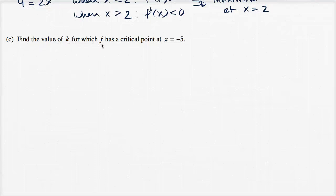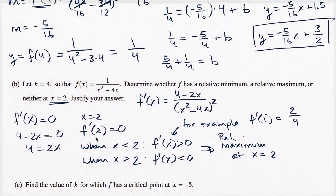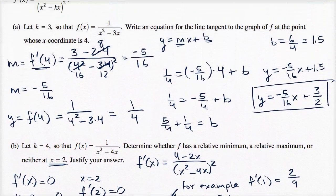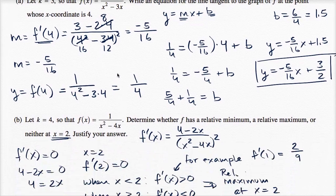Find the value of k for which f has a critical point at x equals negative five. Let's remind ourselves what f(x) and f'(x) were — they gave it to us at the top. f(x) is equal to one over x squared minus kx, and f'(x) is equal to all of this business.